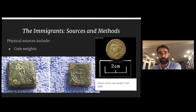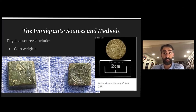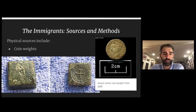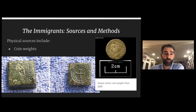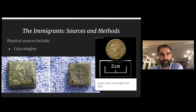Coin weights are another interesting source, though not as commonplace as metal detector finds. If a coin weight was found in the ground in America, there's a good chance the coin it aligns with was also used here. One example is a coin weight found in Virginia for a Spanish eight real. Another — a Queen Anne guinea weight — came off the Queen Anne's Revenge, Blackbeard's ship that sank off North Carolina, suggesting Blackbeard was weighing guineas aboard.